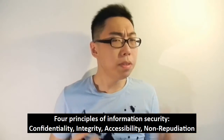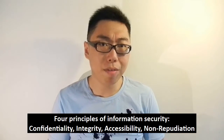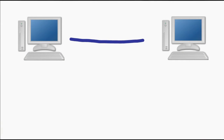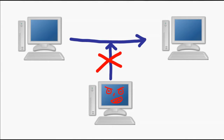Now, some of these terms are kind of self-evident, while some others are not. Let's take it from the top and try to understand what each of them mean. First of all, confidentiality — the idea is, if you are making a transmission, you don't want any unauthorized third party to be able to tap into it and understand its contents.